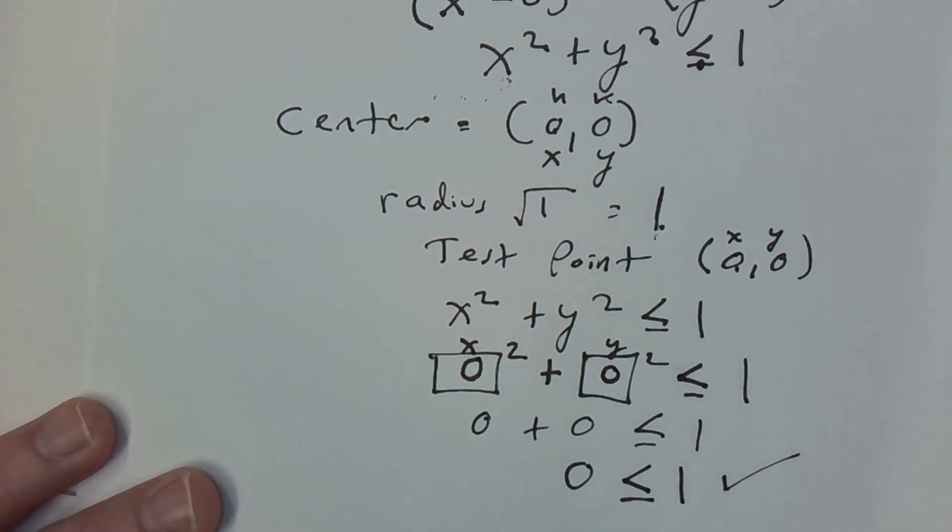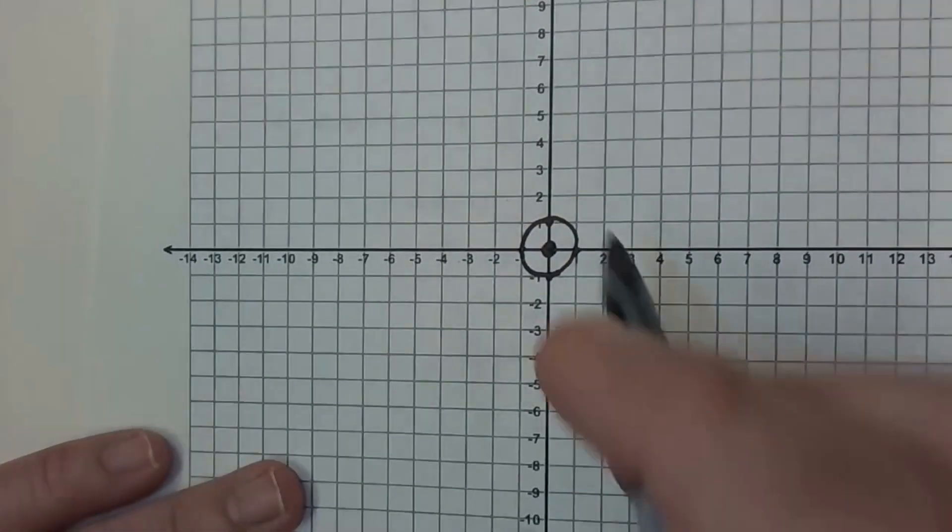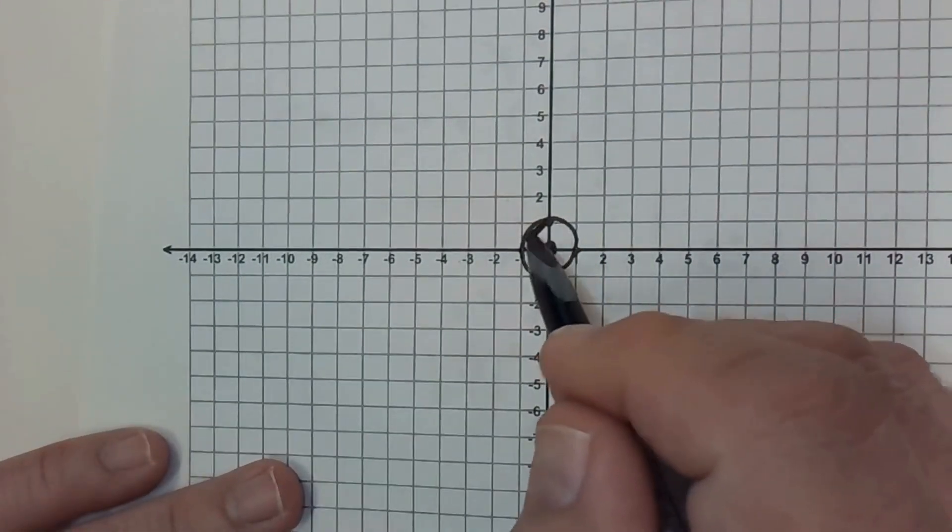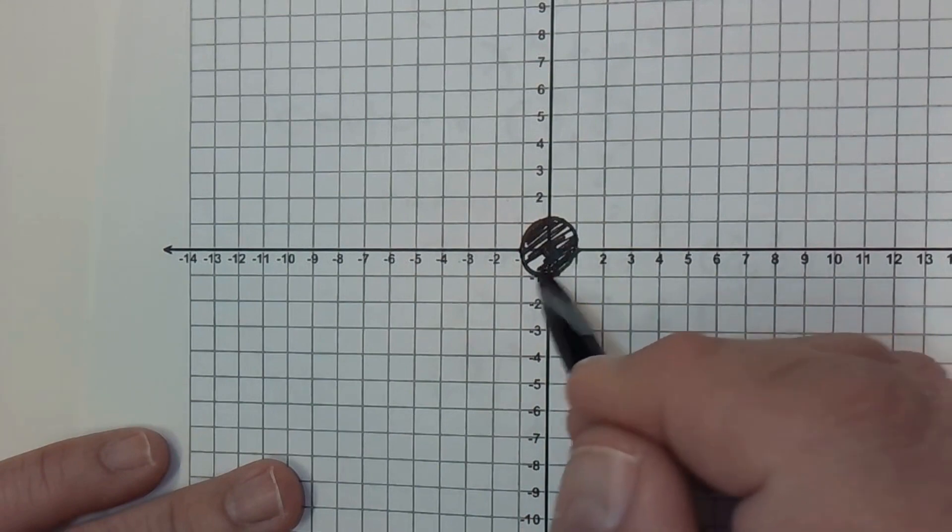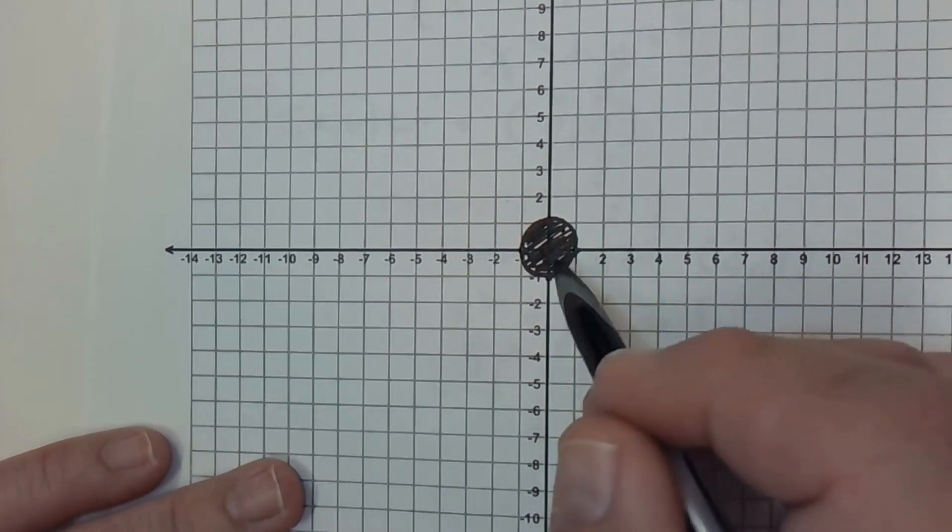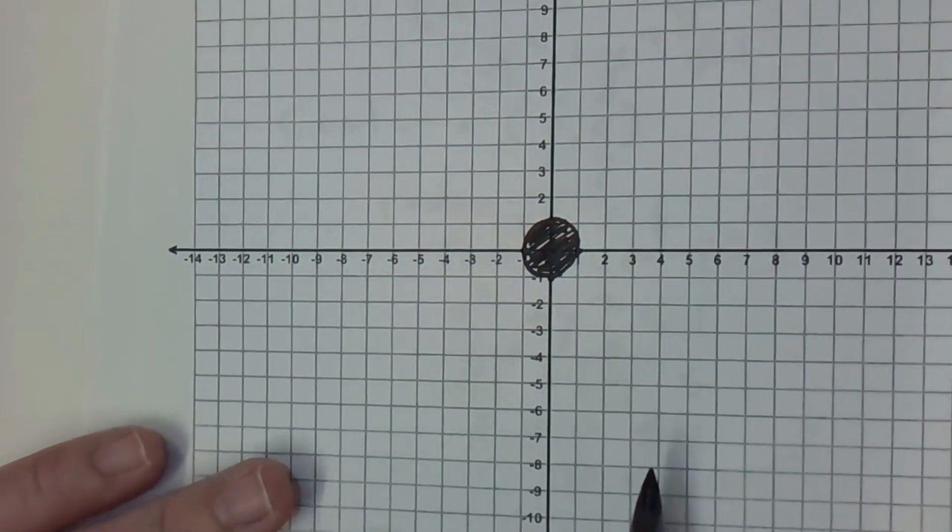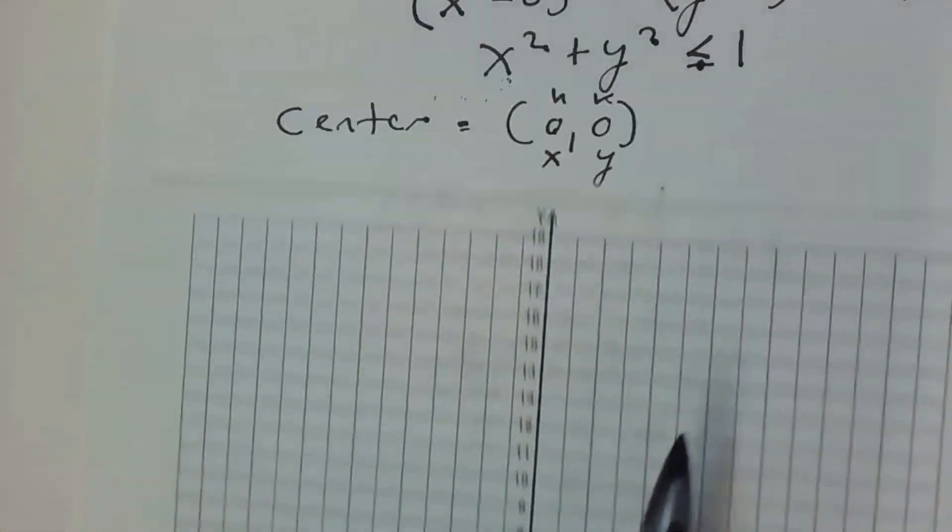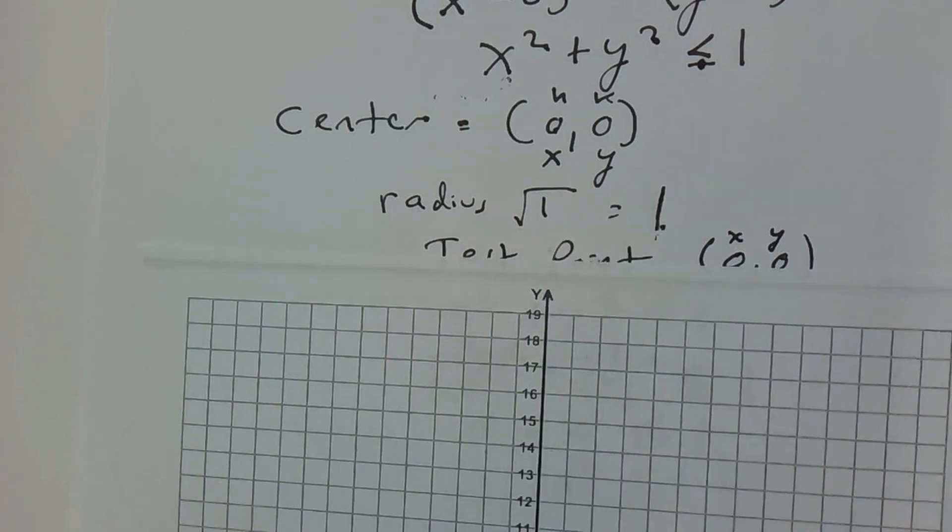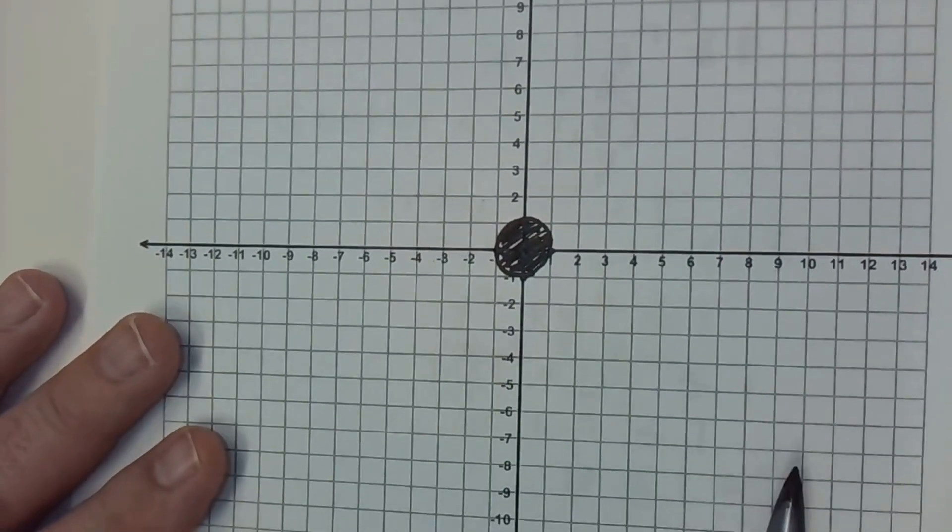So that means that the center of the circle is going to be shaded in. So this is the final graph for that inequality. The center of the circle is shaded like that. And that is our solution. The center is (0, 0). And our radius is 1. And that's what the graph looks like.